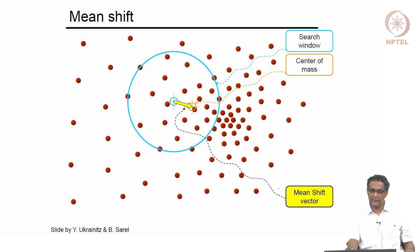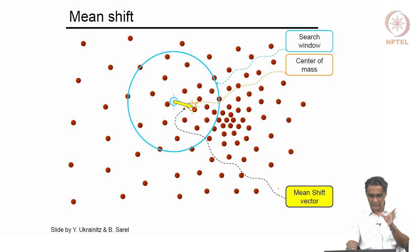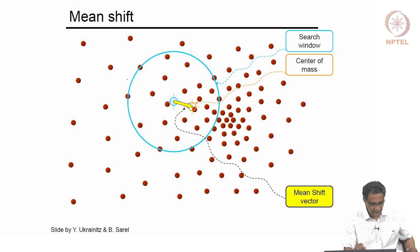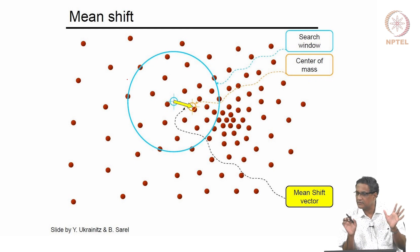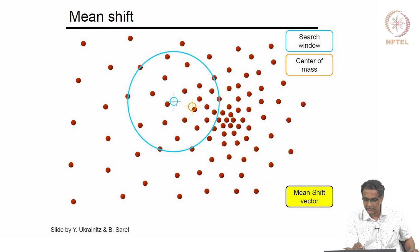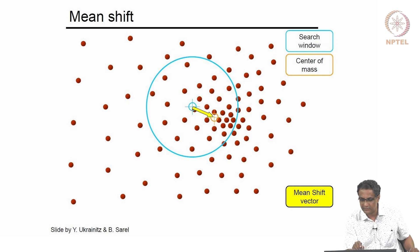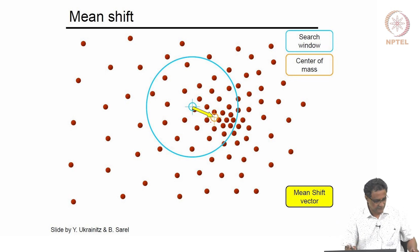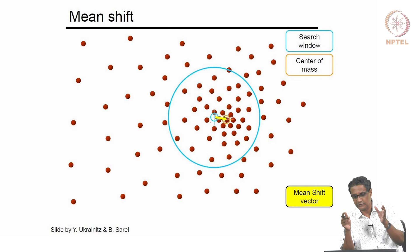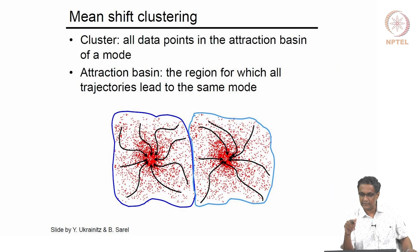Mean shift performs a search starting from any arbitrary point — this is called the basin of attraction. Starting somewhere, there is a vector pointing in the direction of higher concentration, indicating the local maxima. As iterations progress, the blue point shifts to where the yellow dot was, and the step size keeps shrinking as you approach the mode, eventually converging and stopping there.